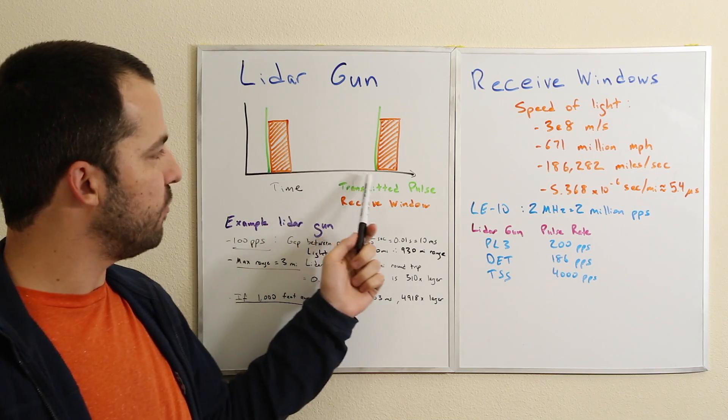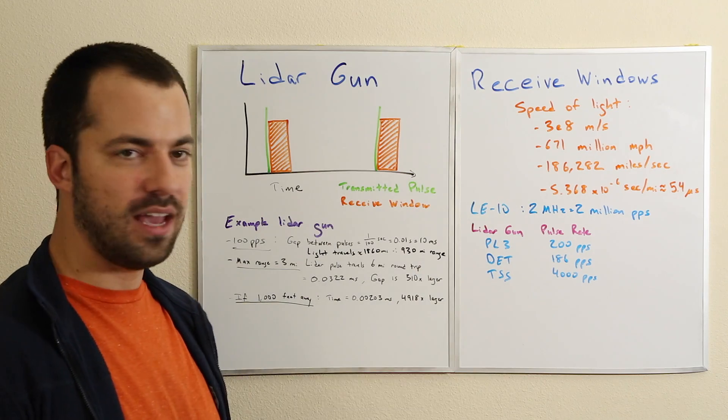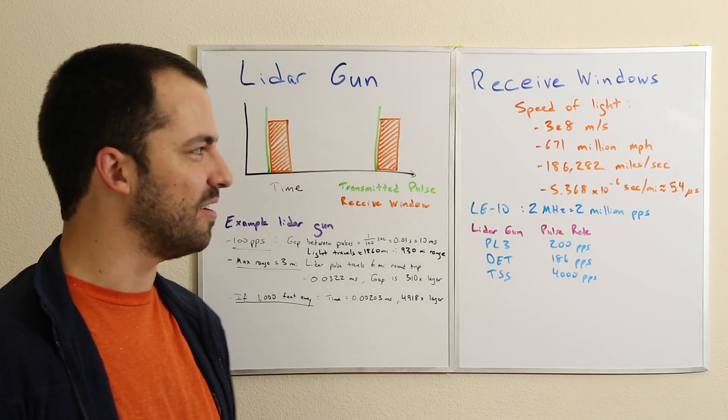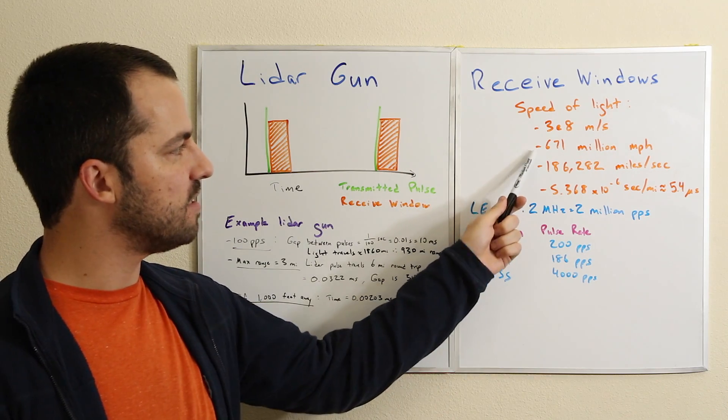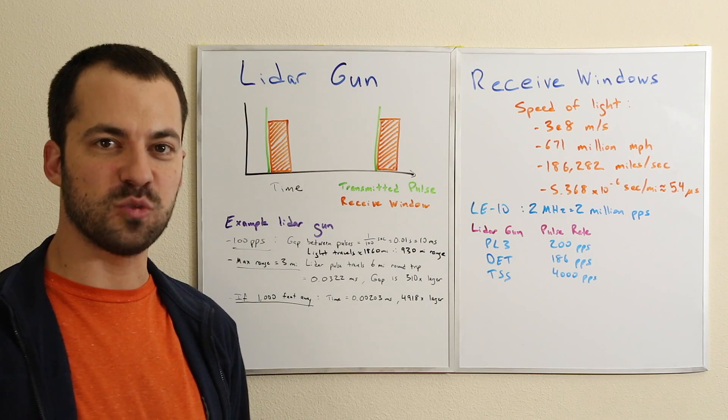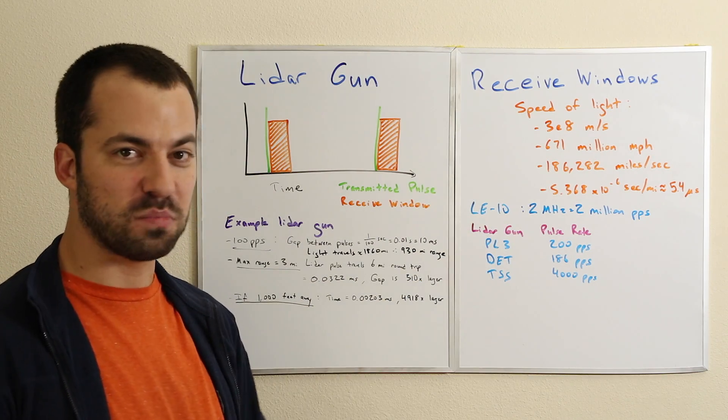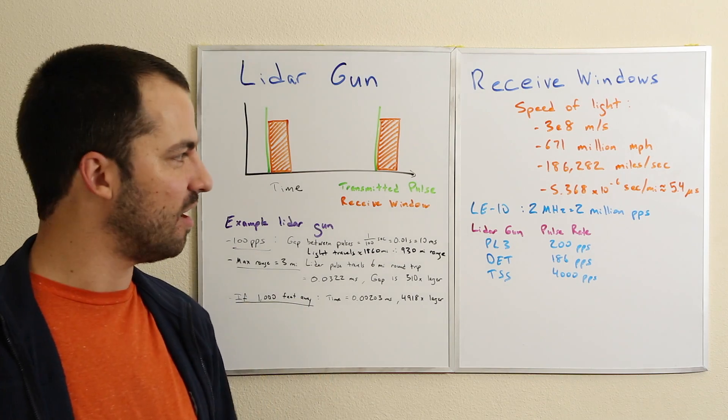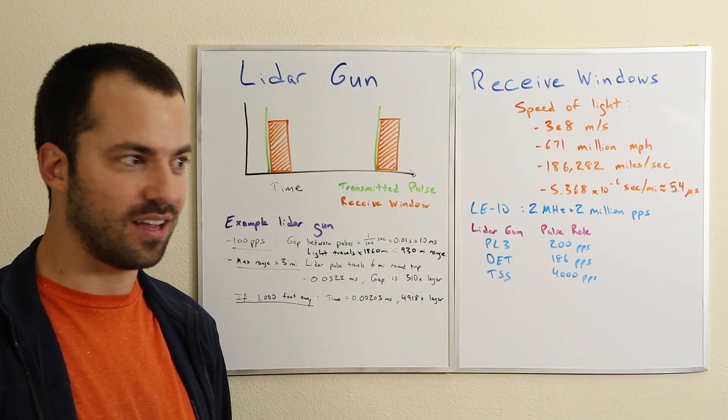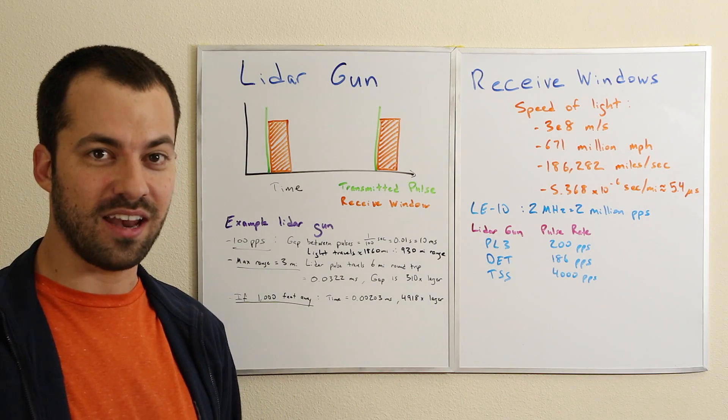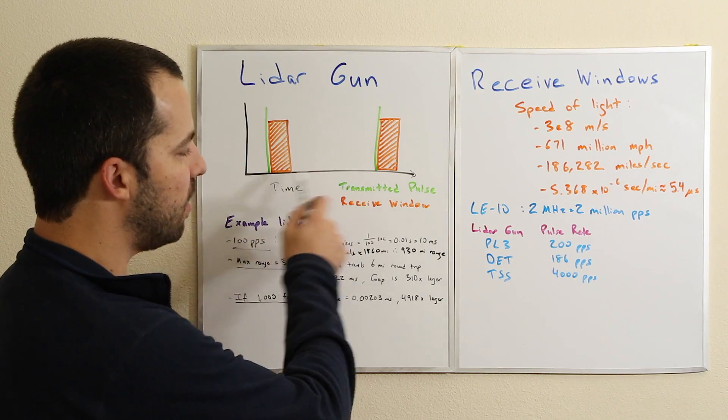How far does light travel in 10 milliseconds? The speed of light is 300 million meters per second - translating that into something that makes more sense, that's 671 million miles per hour or 186,000 miles per second. Every second, light is traveling 186,000 miles. That's a huge distance - between here and the moon it takes a second and a half for light to travel. It's super fast.